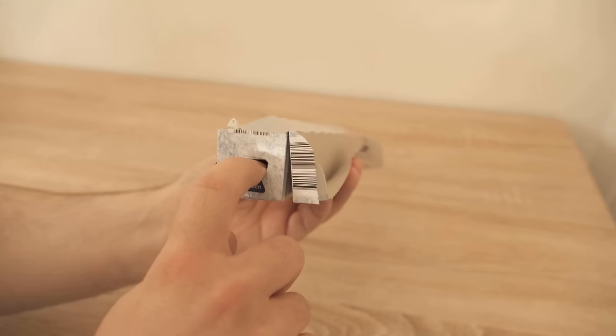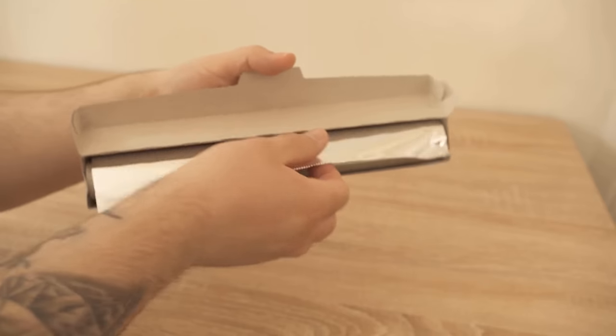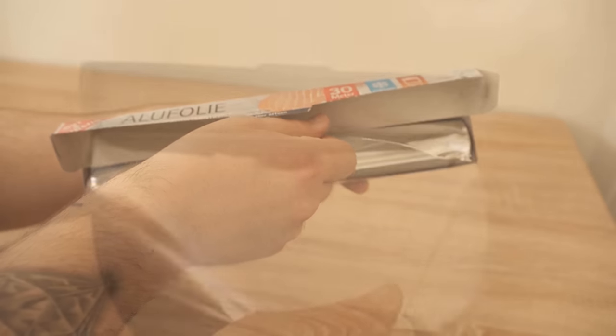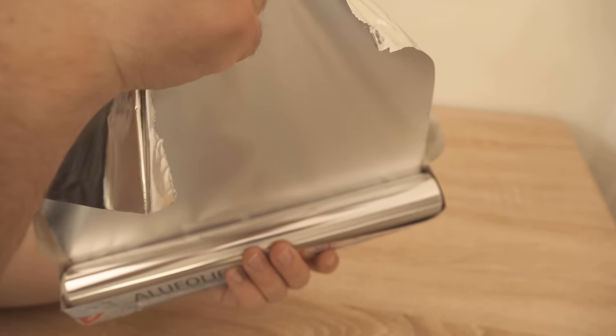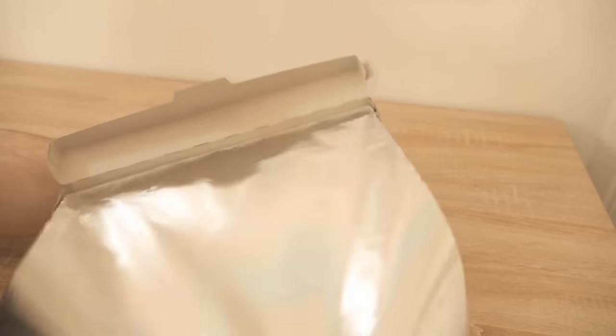All you have to do is press these ends in once. Now you can see that if I need something from the aluminum foil, I can pull on it normally and unroll from the roll without having to pull the roll out of the packaging every time.